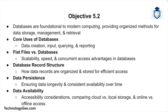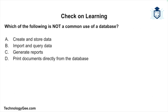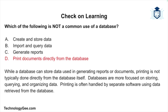Now let's do some check on learning. Question one: which of the following is not a common use of a database? Is it creating and storing data, importing and querying data, generating reports, or printing documents directly from the database? The correct answer is printing documents directly from the database. While a database can store data used in generating reports or documents, printing is not typically done directly from the database itself — databases are more focused on storing, querying, and organizing data. Printing is often handled by separate software using data retrieved from the database.